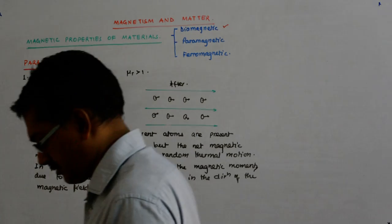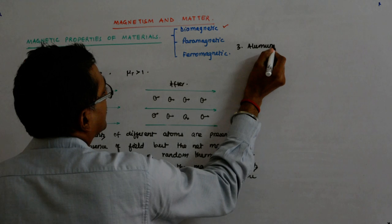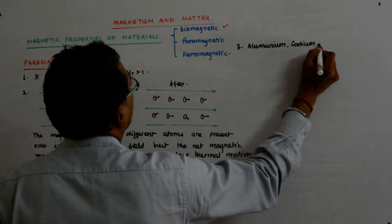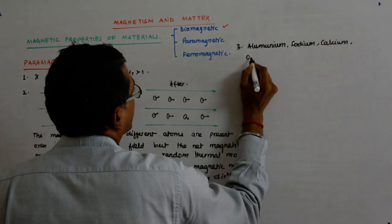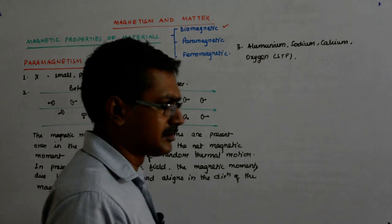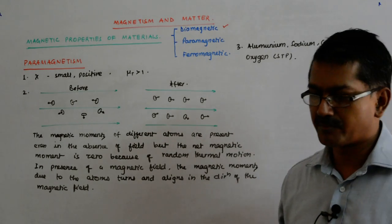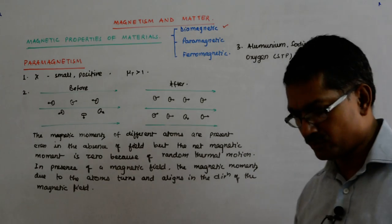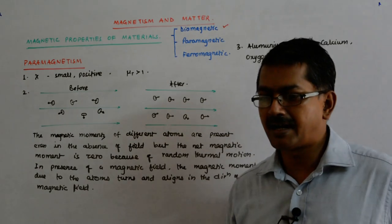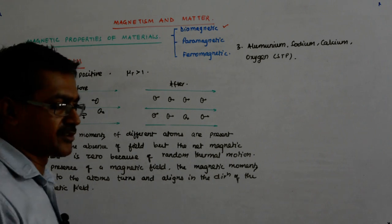Examples of paramagnetic materials are aluminum, sodium, calcium, oxygen (only at STP), and copper chloride. Right now if you bring a magnet near oxygen, atoms will align. But you will not be able to see it because they are randomly moving. If you do it in a container and then check it — and apart from that, air also has nitrogen which is diamagnetic — so it has to be pure oxygen within a container. And the density should be high, meaning at high pressure. Then you will realize it more.